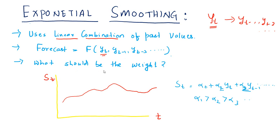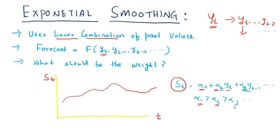Now, the question is: what should be the weight attached to yt, and what should be the weight attached to yt minus 1, yt minus 2, and yt minus 3? When we talk about linear combinations, it is nothing but some constant multiplied to the lag time series and then summed over it. If st is the forecast value, it is a linear combination: alpha1 times yt, alpha2 times yt minus 1, and so on. The condition in exponential smoothing is that alpha1 should be greater than alpha2, greater than alpha3, and so on — meaning that with time, the weight associated with the time series should go down.